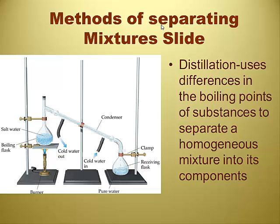Mixtures can be separated through physical means. One method is distillation — you're doing phase changes, which is a physical process. You heat up a substance, get it to evaporate, and then cool it down. This separates two substances with different boiling points. For example, with alcohol and water mixed together, alcohol boils at a much lower temperature, so it boils off first, travels down a tube, gets cooled by the condenser, turns back into a liquid, and falls into a separate flask. That flask should be pure alcohol, while the other flask holds the remaining water. Distillation is used a lot in organic chemistry.